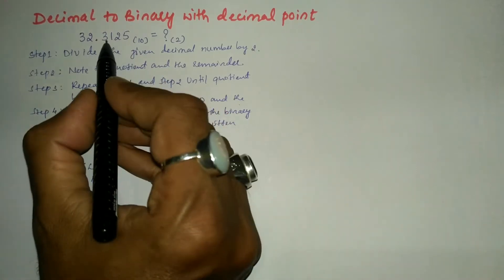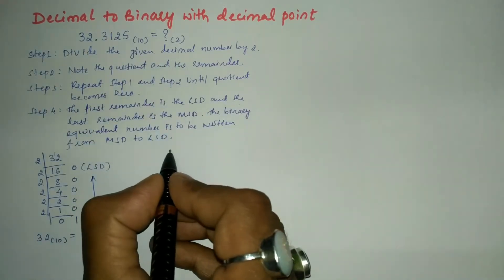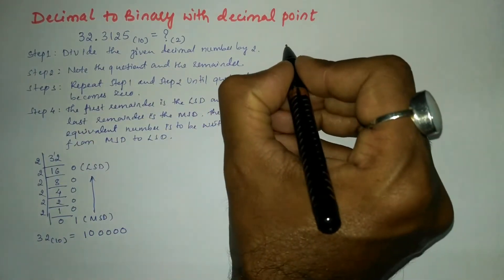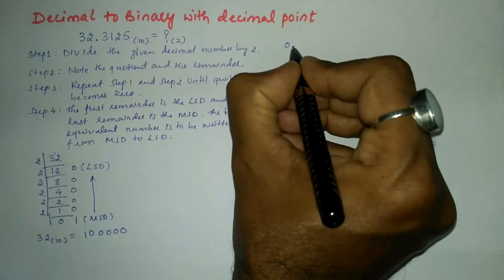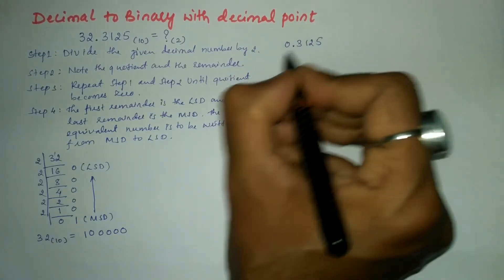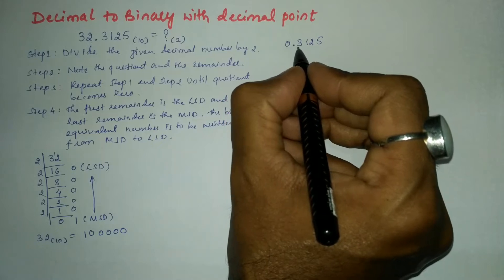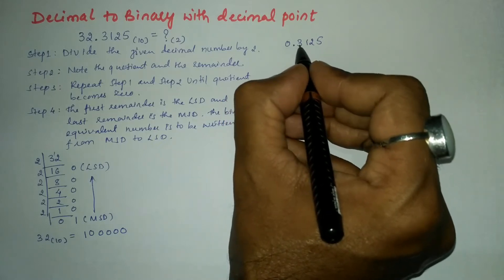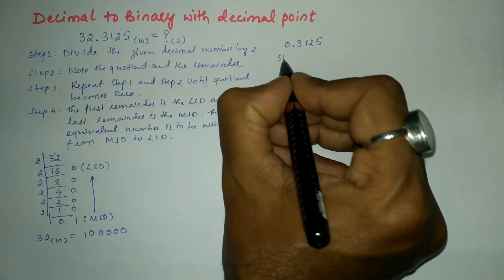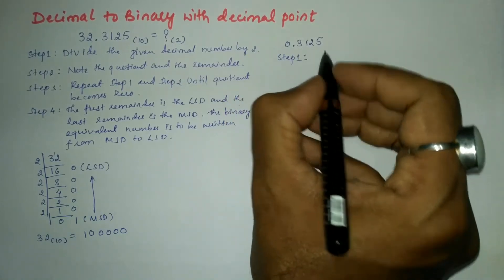Now we come to the fractional part. Separating it, we get 0.3125. In order to convert this decimal fraction into binary we have to follow certain steps.